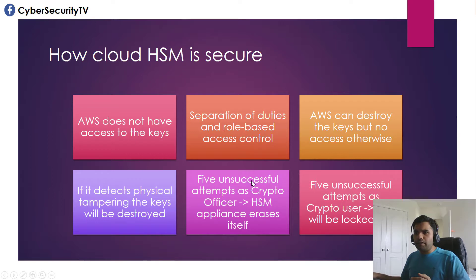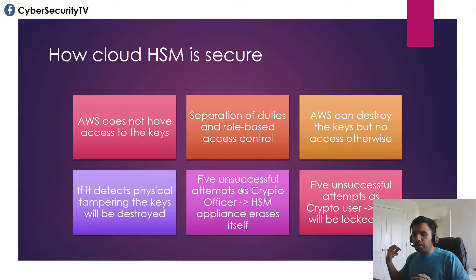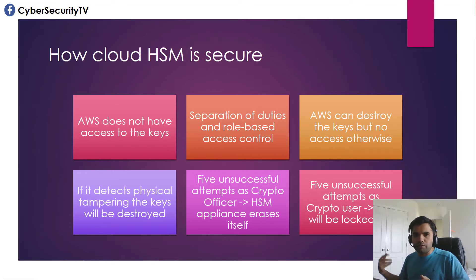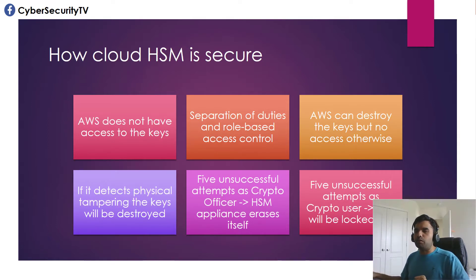There is a Crypto Officer user role — I'll show you in the demo how it looks. If that user has five unsuccessful login attempts, the HSM appliance locks itself. The same applies to the Crypto User role — the user will be locked out after five unsuccessful attempts. We'll actually do this in the demo, so it will be fun to see how it works in the real world.